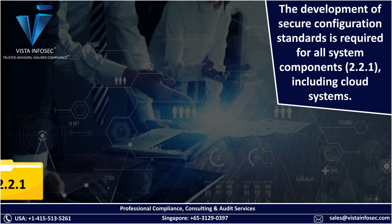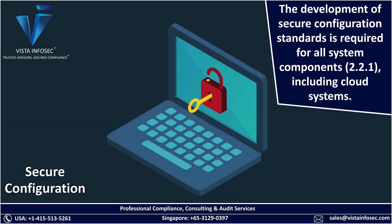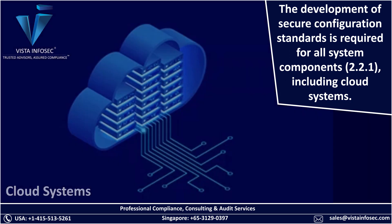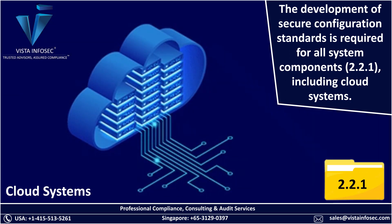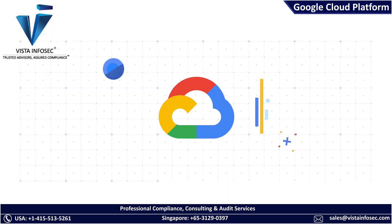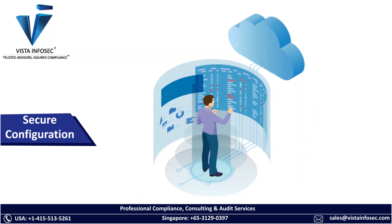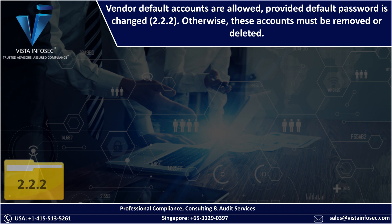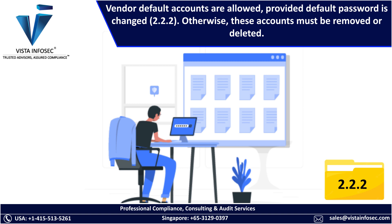Requirement 2.2.1 introduces a significant change: default secure configuration standards are now required for all system components, including cloud systems — something that was completely ignored up to version 3.2.1. Whether you are using AWS, GCP, Azure, or your own native cloud systems, you need to have secure configuration standards for them as well.